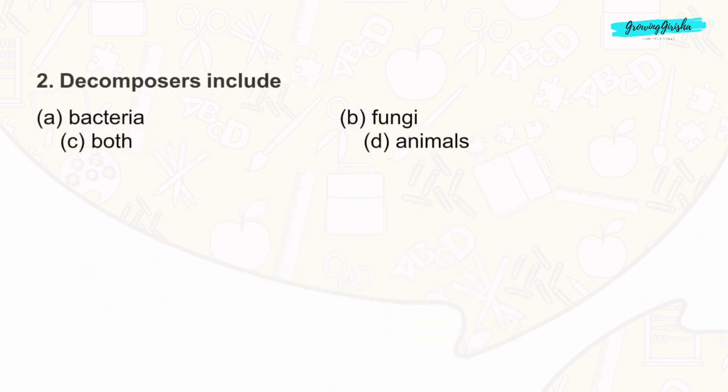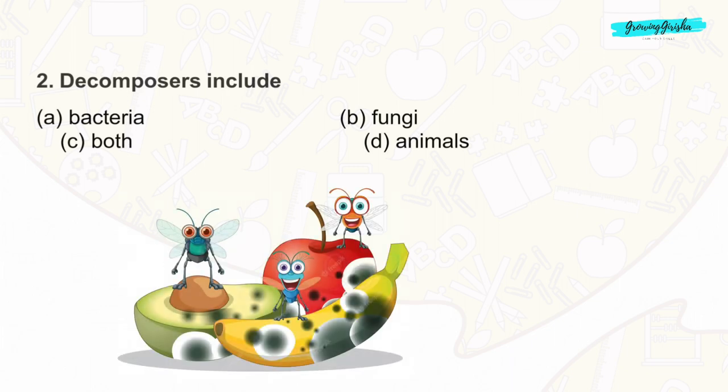Question 2: Decomposers are organisms that break down dead organic matter such as dead plants and animals into simpler substances like nutrients and minerals. Examples of decomposers include bacteria, fungi, and certain insects. The correct answer is option C: both.